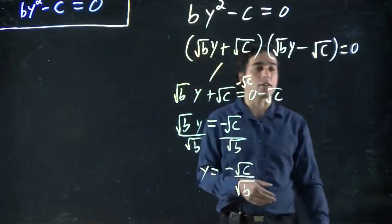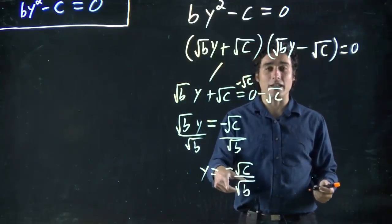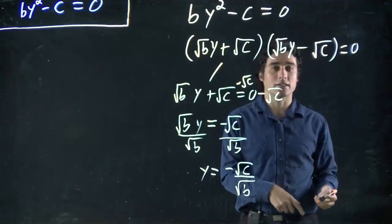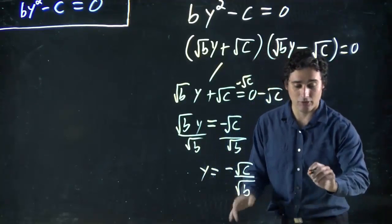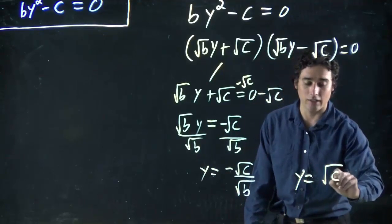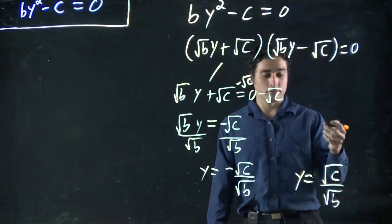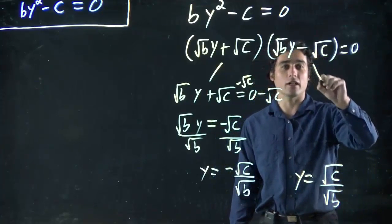And we'll now do the same for the other. But quick thing, I mean quick trick. Remember, what we've been finding is always plus and minus of the same thing. So if I had to guess without doing any work, I'm going to guess the other solution is square root of c over square root of b. Let's see if I'm right.